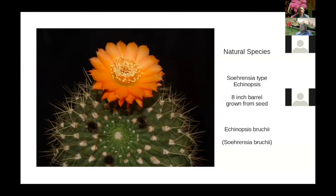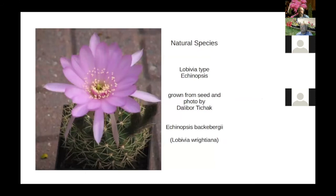This is a Soehrensia — specifically Soehrensia bruchii or Echinopsis bruchii. This is a plant grown from seed; in this picture it's about eight inches across and it's a barrel cactus. The flowers can be a slightly different color. These are all the plants — all the genera — that went into Paramounts: Lobivia, shown here as Echinopsis backebergii or Lobivia rauschii, among others. Those are the main genera that went into creating Paramounts.